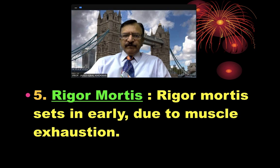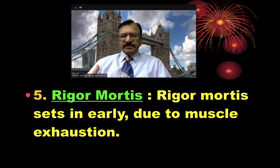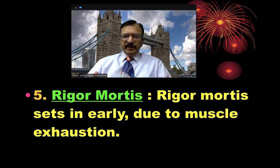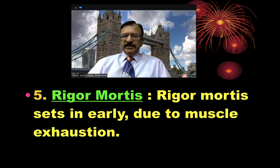About rigor mortis, it sets in early because of muscle exhaustion, because the person was struggling. The muscles were active when he was drowning — he was struggling and all the ATP and energy was consumed. That is why rigor mortis sets in early in drowning.